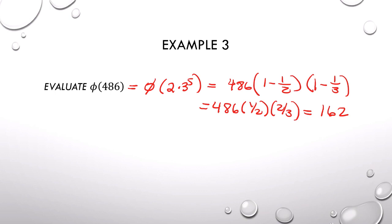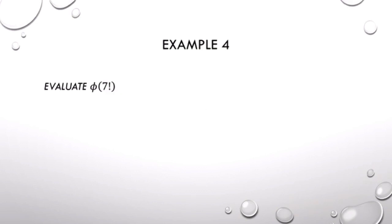We'll do one more of these and then we'll move on to the next subject. Phi of 7 factorial. So you want to find the prime factorization of 7 factorial. The hard way would be to multiply that all out. Let's just write out what 7 factorial is.